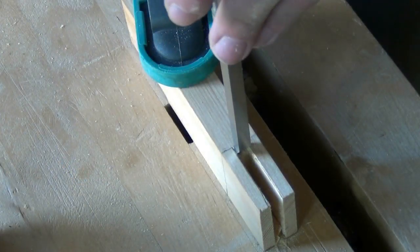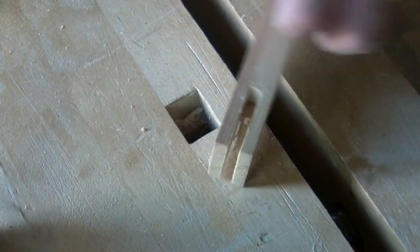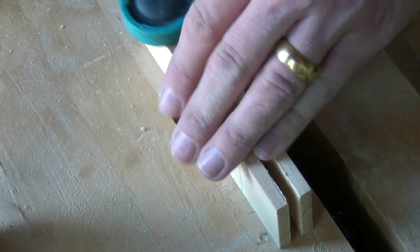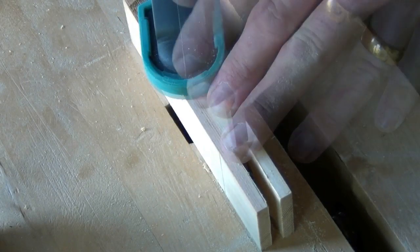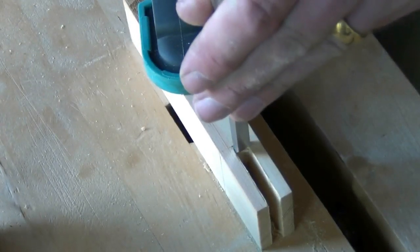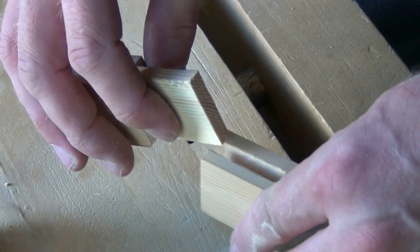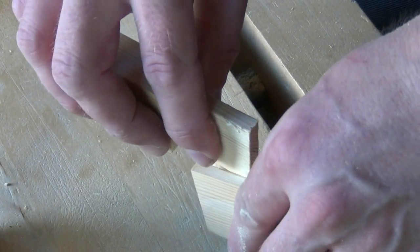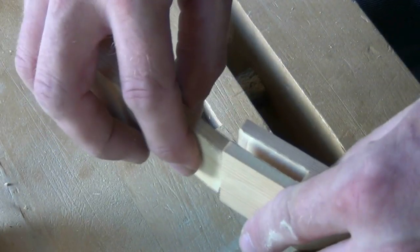Now chopping the mortise to final depth. Flip it over and finish from this side. Now we check the tenon for fit, and we see it's very tight.